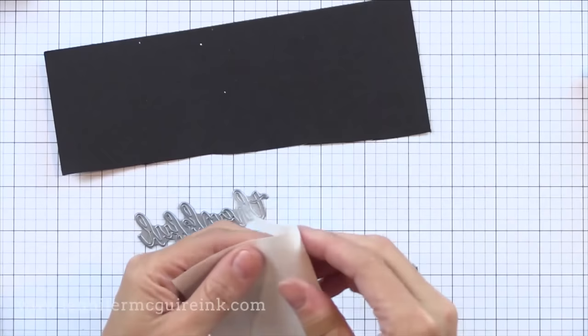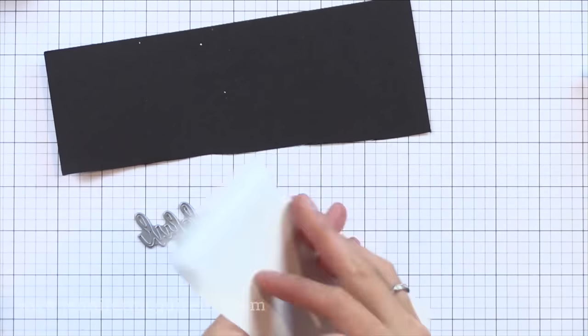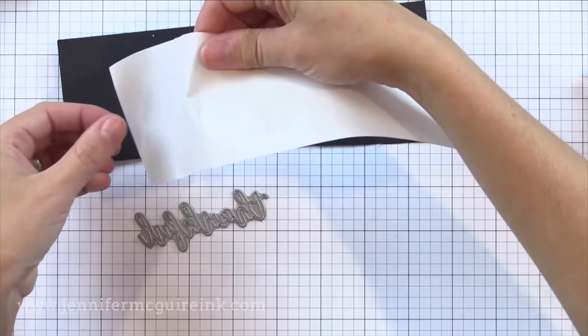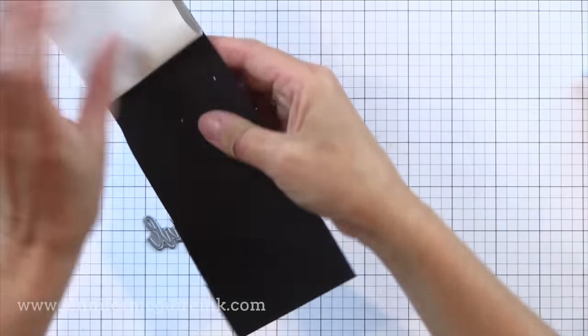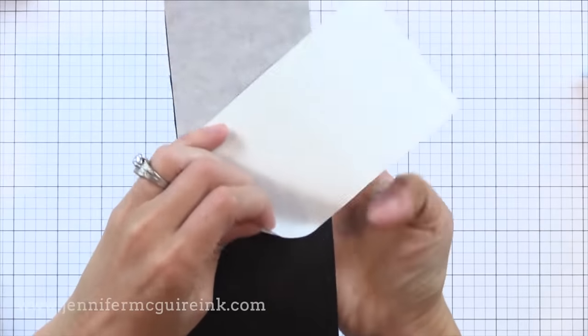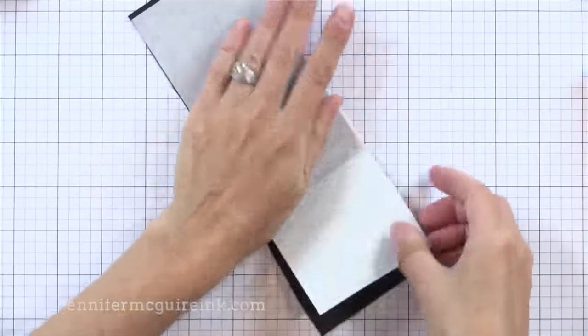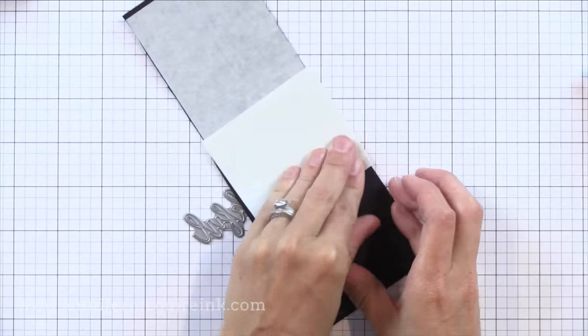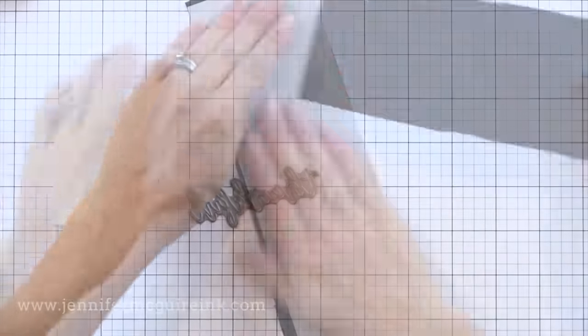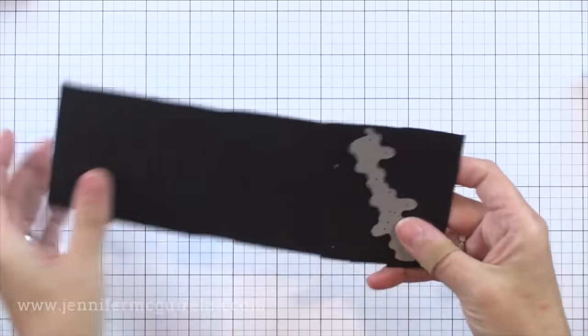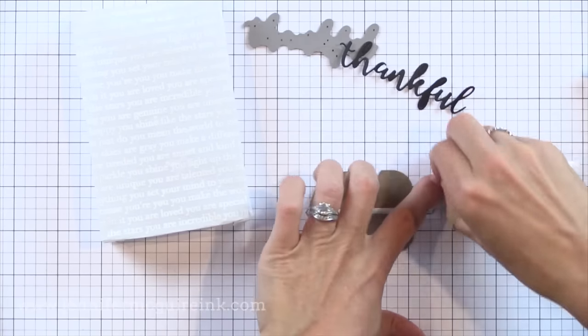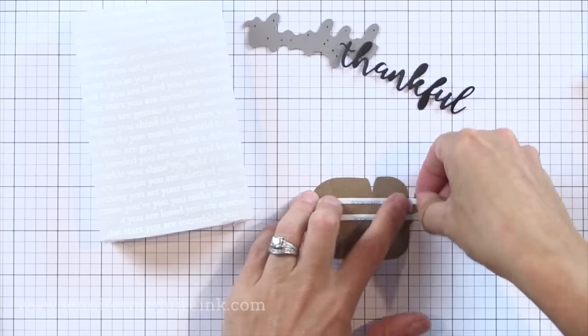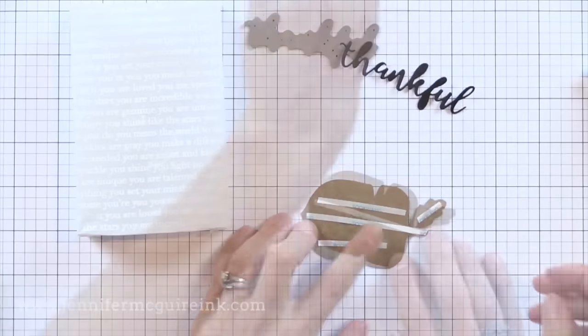So now it's time to decorate our envelopes. I have my cute little images that I colored from earlier. But I also need a sentiment and I decided to put Thankful on here with using this new Simon Says Stamp die. I want to do this from black cardstock but I didn't want to have to fuss with adhering it. So I'm putting Stick It double sided adhesive on the back side of my black cardstock. After running that through my die cut machine I have a black cardstock die cut that has adhesive on the back already.